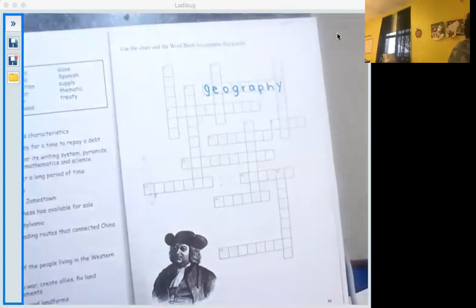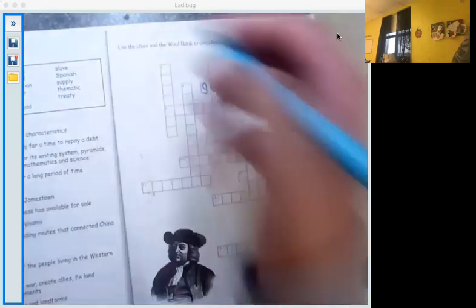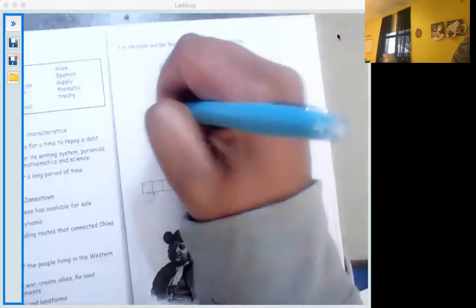Okay, number six across. A type of servant who works without pay for a time to repay a debt. That is not a slave, but that is an indentured servant. So we're going to write the word indentured here.